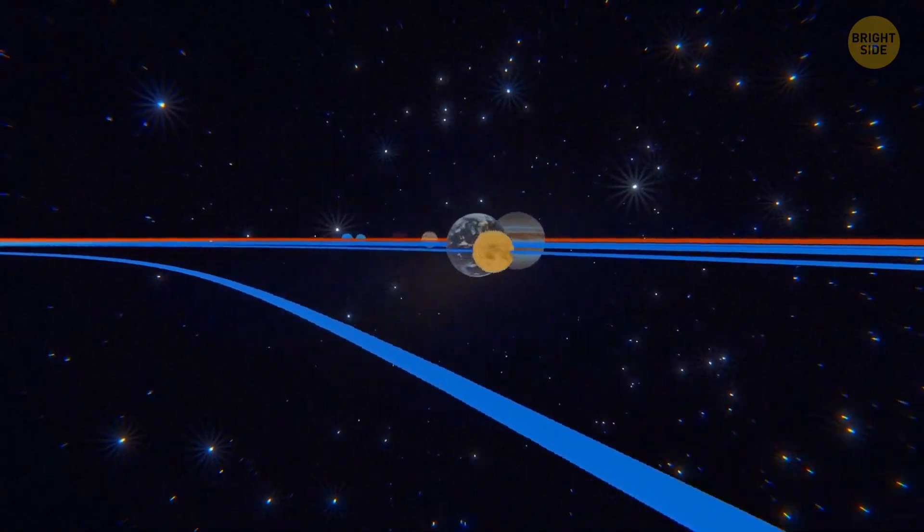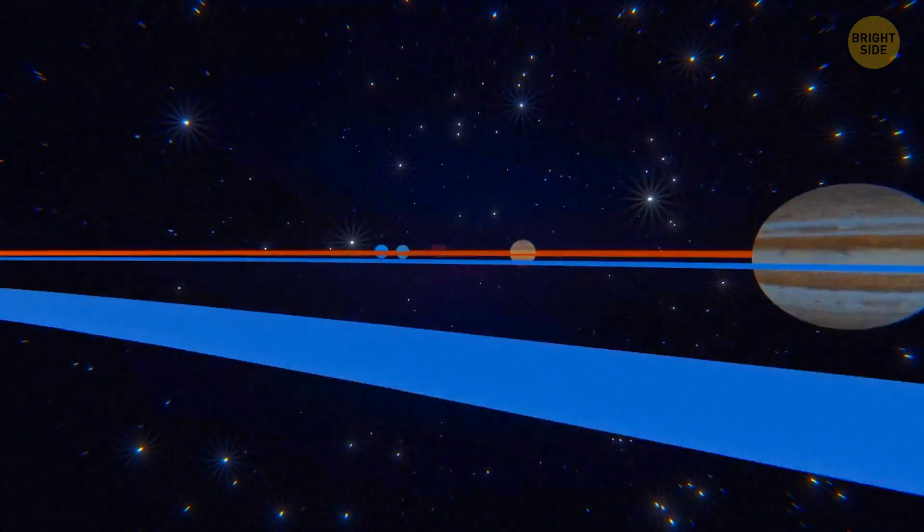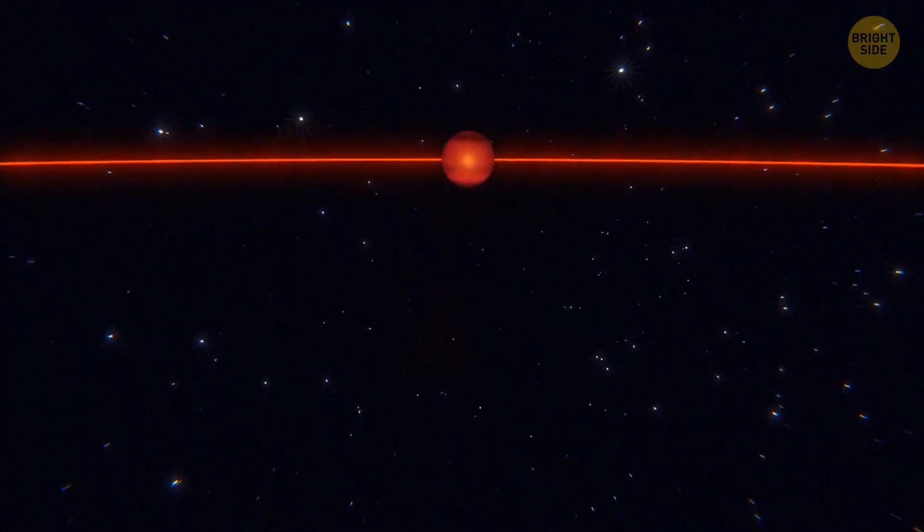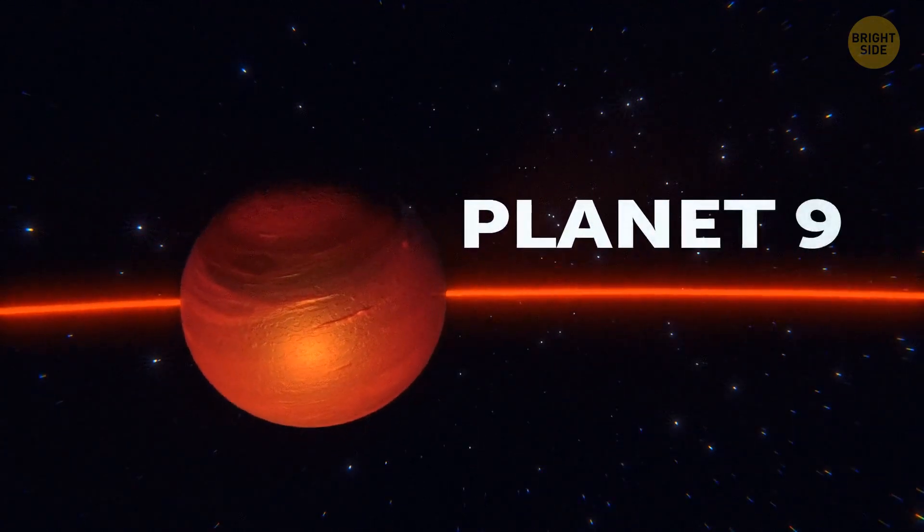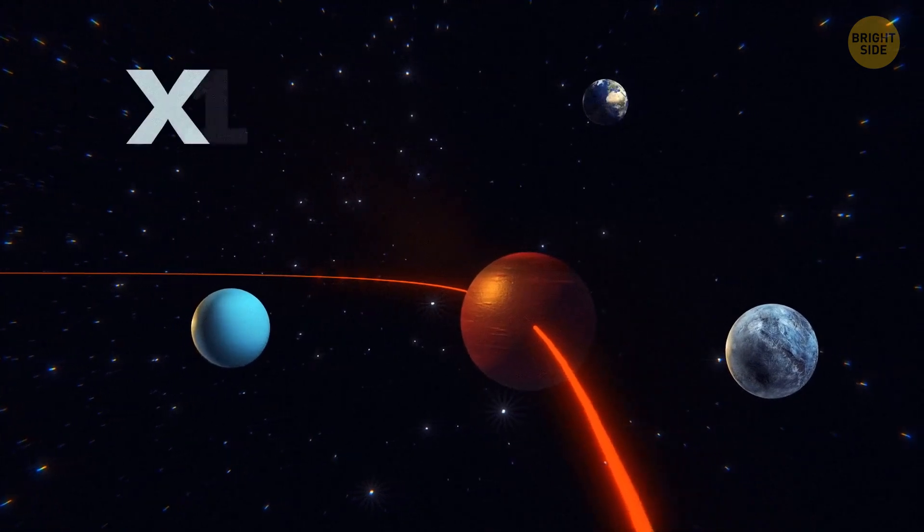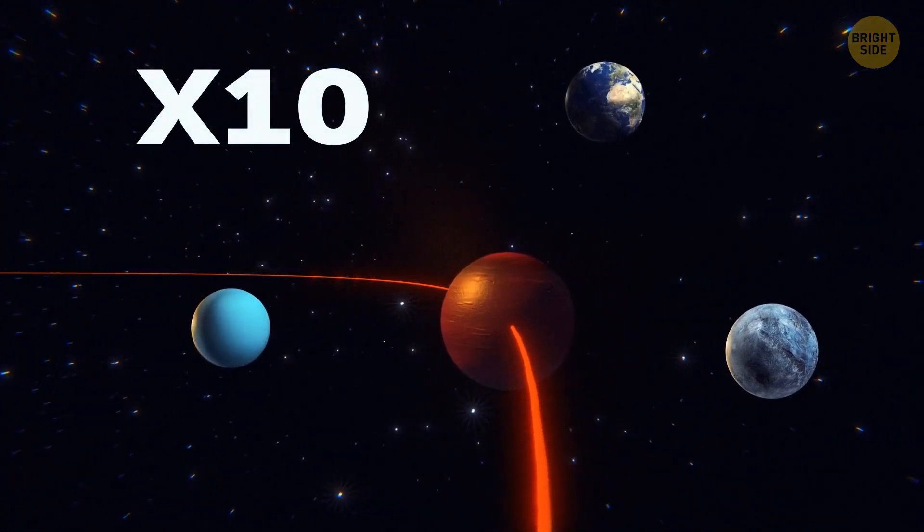There's probably a giant planet lurking at the edge of the solar system, far beyond Neptune. Scientists call this mysterious hypothetical world Planet 9. If it does exist, it's probably similar to Uranus or Neptune, and 10 times more massive than our home planet.